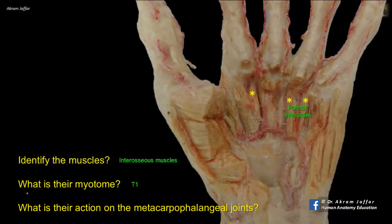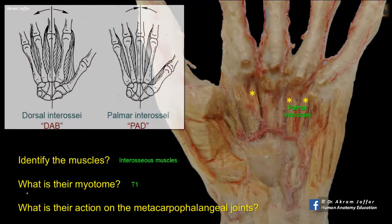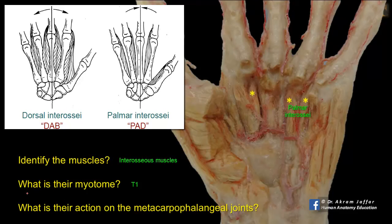Regarding the function, the dorsal interossei abduct, while the palmar interossei adduct. Remember PAD and DAB — palmar adduct, dorsal abduct. Also remember the axis of adduction and abduction passes through the middle finger. Thus, the middle finger cannot be adducted, because whichever way it moves to the side it will be abducted. So, it has no palmar interosseous muscle attached to it.